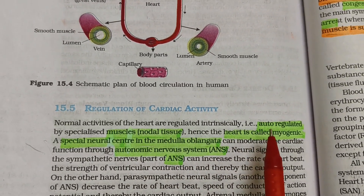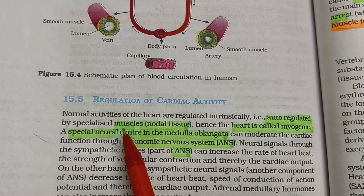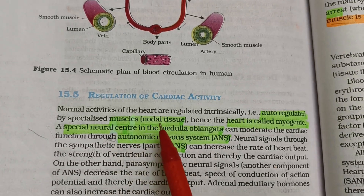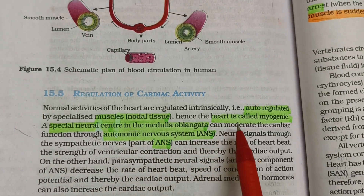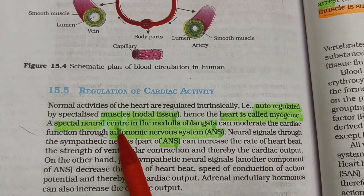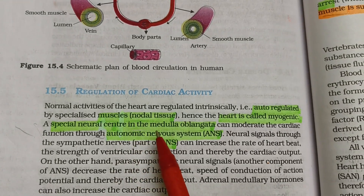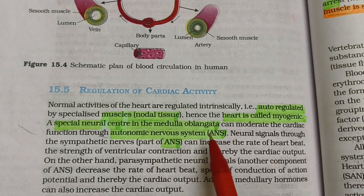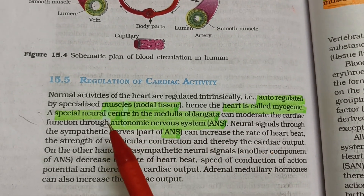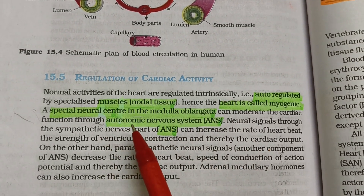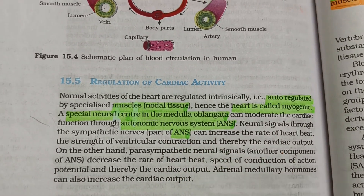Cardiac activity is auto-regulated by specialized nodal tissue, and the heart is therefore called myogenic. A special neural centre in the medulla oblongata can moderate cardiac function through the autonomic nervous system (ANS).